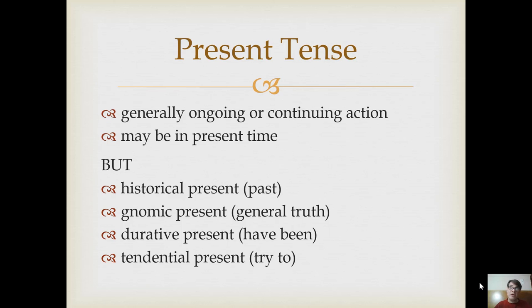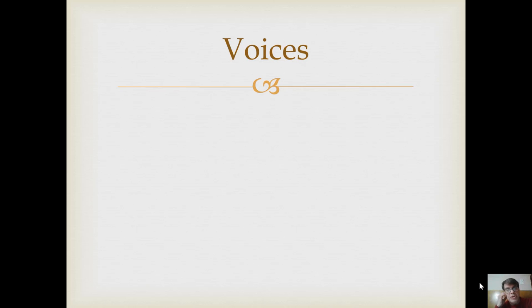In beginning Greek we say present tense means ongoing action and present time — but by third semester, that's out the window. It's much more nuanced, which is why saying Romans 7 has to be about Paul currently because the verbs are in the present tense is not accurate at all. Most scholars don't think Romans 7 is about Paul talking about his current experience. Enough of that — let's talk about voices. This video really wants to introduce you to the forms for the middle and passive voice of the present.